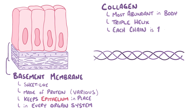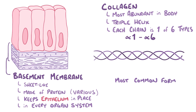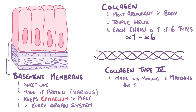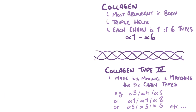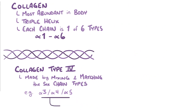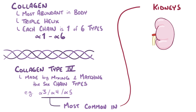Each of the chains can be one of six types, named alpha-1 through alpha-6, and the most common form of collagen found in the basement membrane is collagen type-4, which is made by mixing and matching these six alpha chains. One version of type-4 collagen combines the alpha-3, alpha-4, and alpha-5 chains; another combines two alpha-1s and an alpha-2; and a third version has two alpha-5s and an alpha-6. It turns out that the alpha-3, alpha-4, alpha-5 variant is most common in the glomerular basement membranes of the kidneys and the alveolar basement membrane of the lungs.